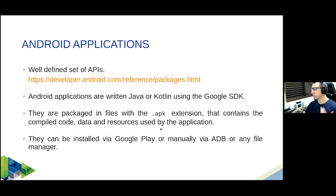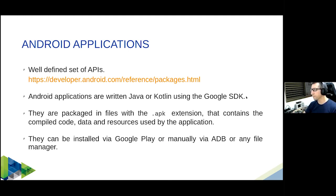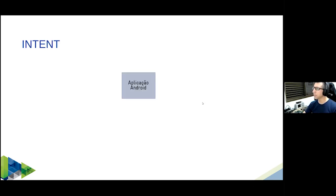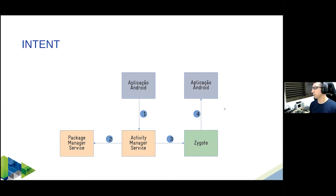On top of everything we have the applications. Compared to Linux, Android applications are developed by default in Java or Kotlin, though other languages can use bindings. Applications are packaged in APK format containing code, resources, and everything else, and installed via the Google Play marketplace or manually. Android applications are composed of different components and communicate over a protocol called Intent — quite different from Linux graphical applications using GTK or Qt.